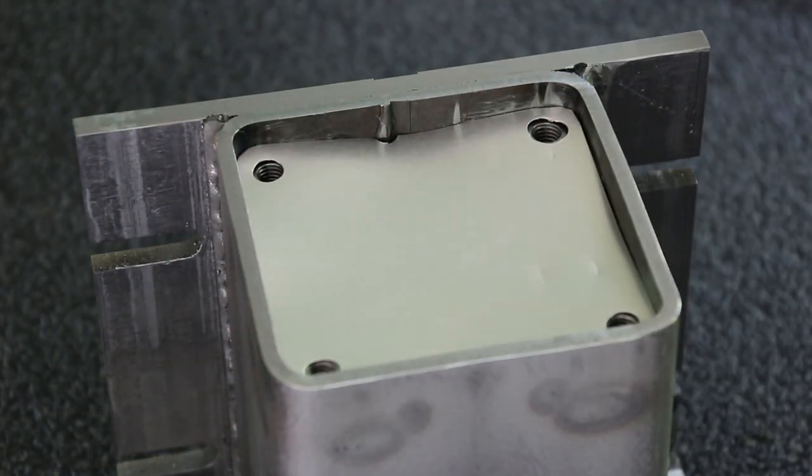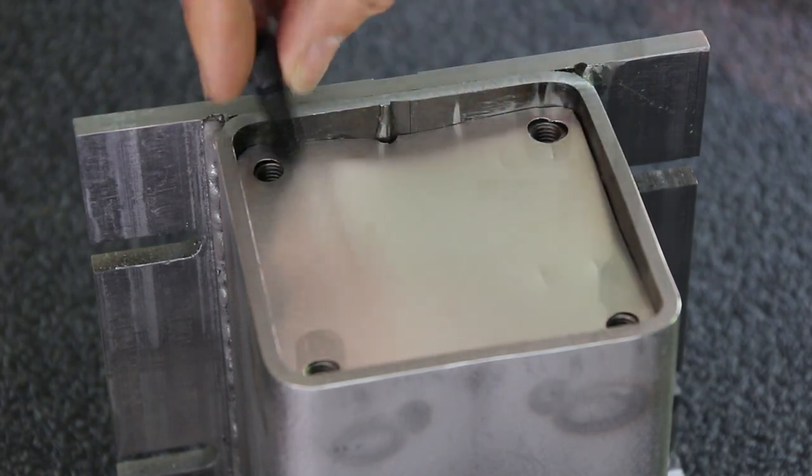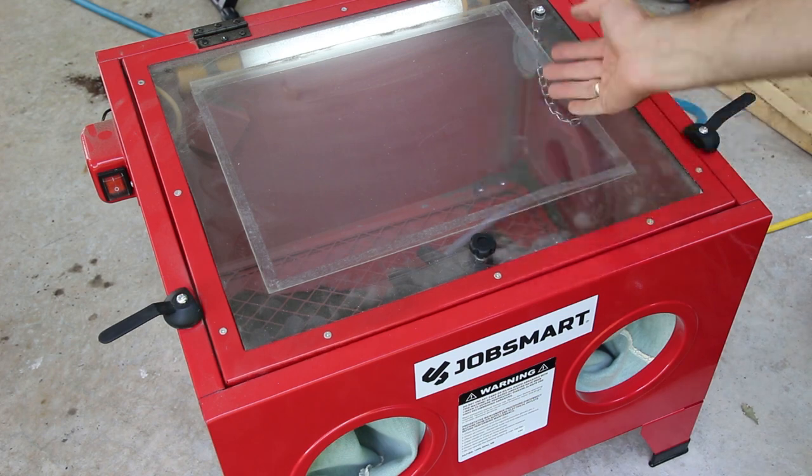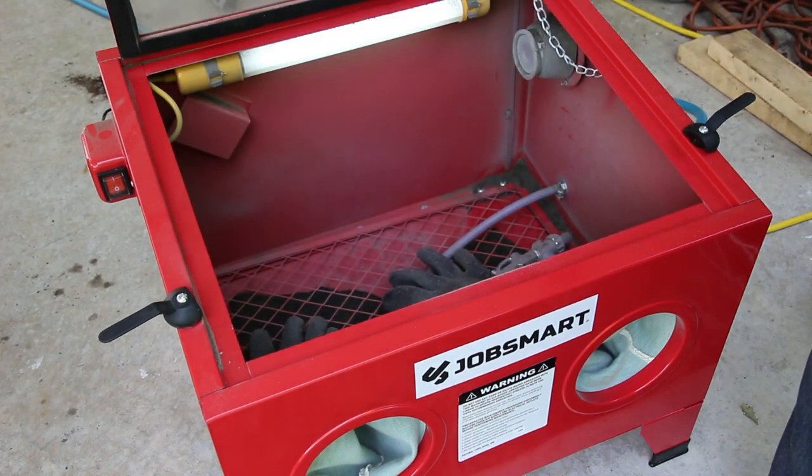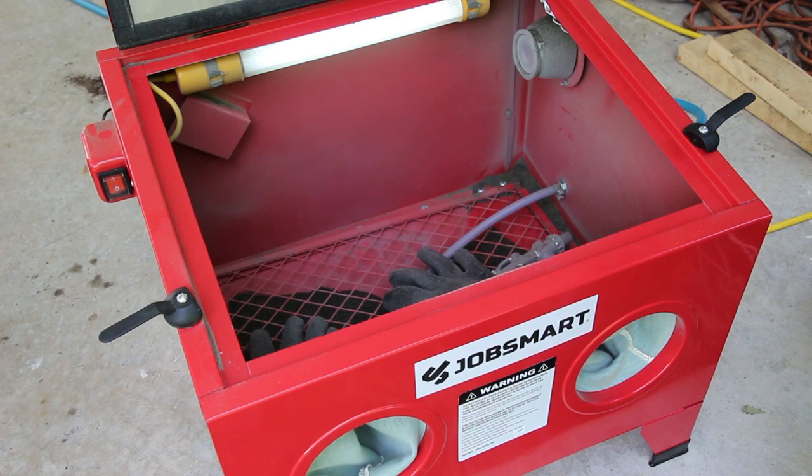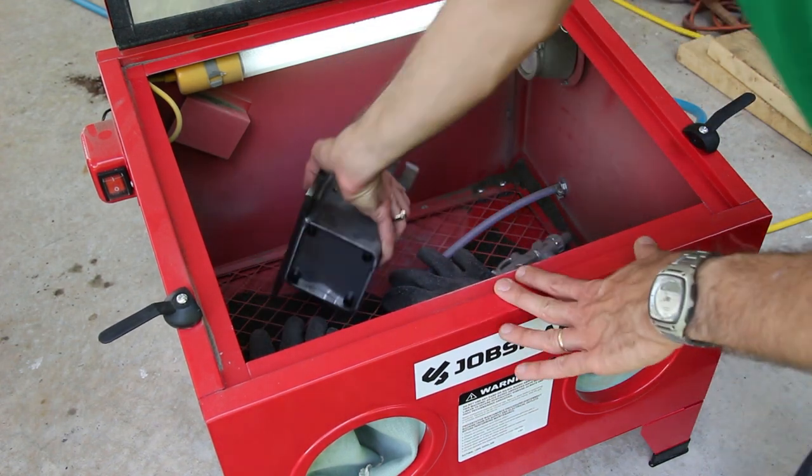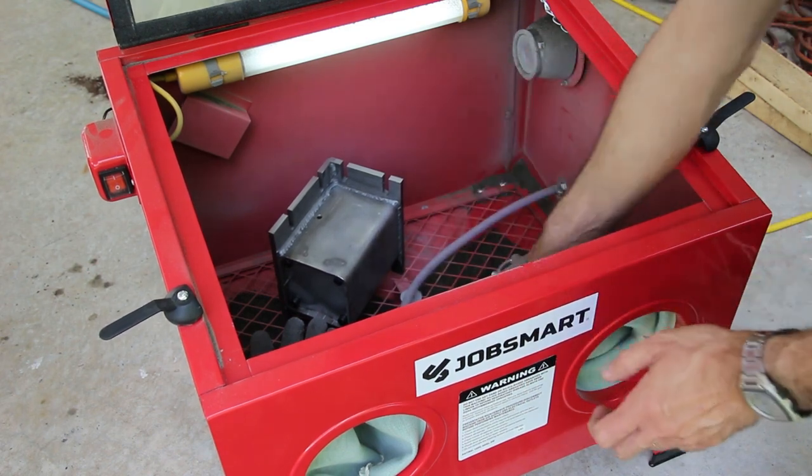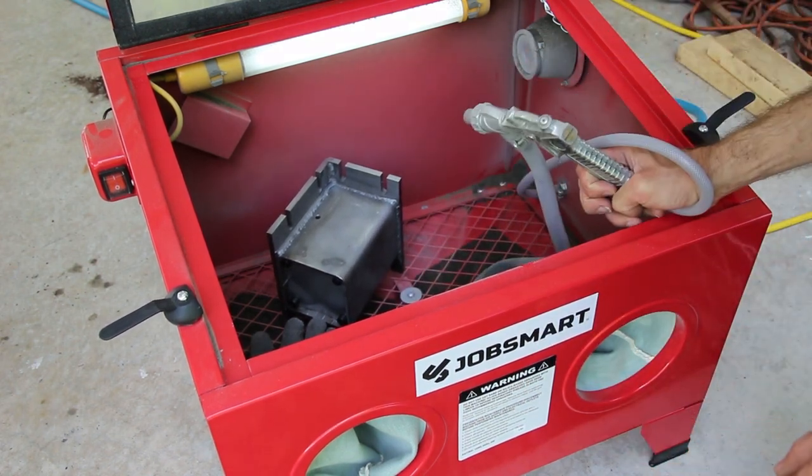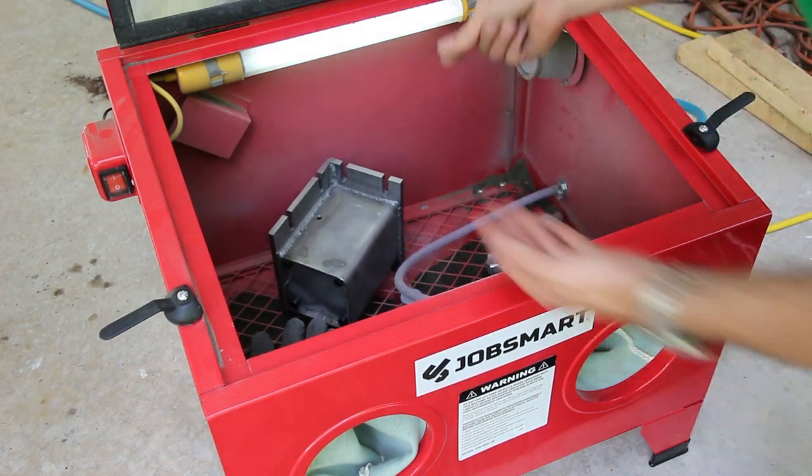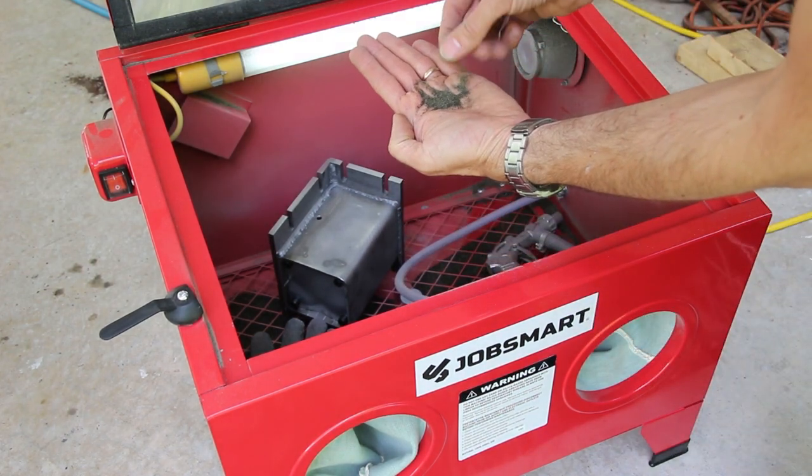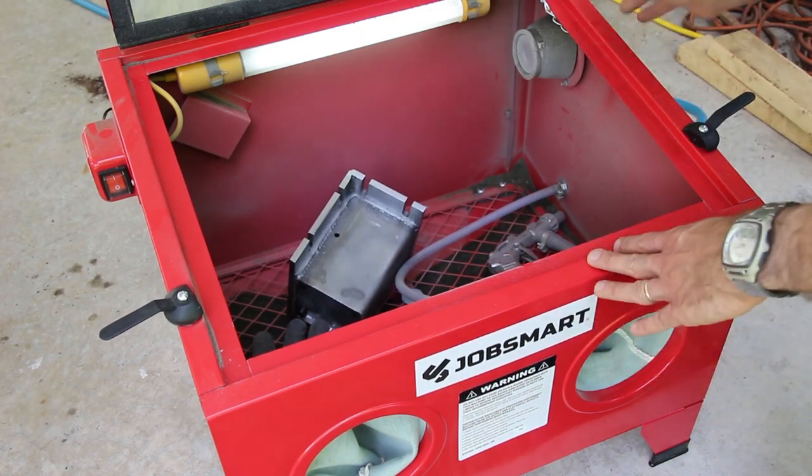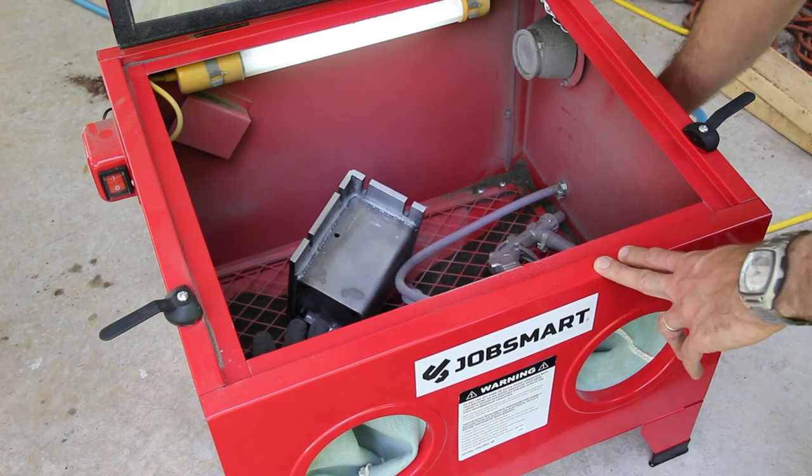This is my sandblasting cabinet. It's a fairly inexpensive benchtop unit and doesn't have a huge capacity, but it's big enough for my needs. I'll go ahead and put the part in. Inside there are gloves for my hands and the actual sandblast gun, and then I have abrasive in the bottom. The abrasive I'm using would be considered a fine sand—fairly common.